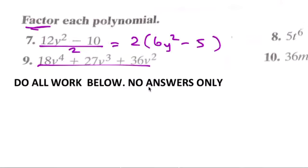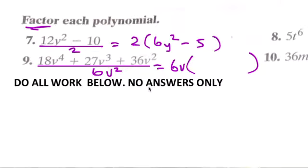Factor out on all this is 6, v squared. So your answer is 6v parentheses, 3v to the second. Oh no, 6 does not go into 27. 3, so 3v, that gives us 6 here.